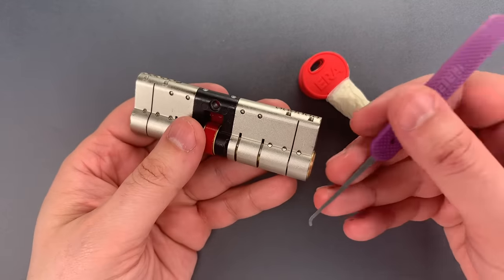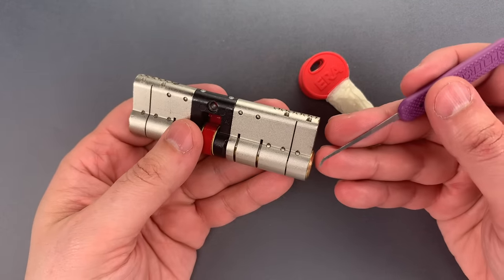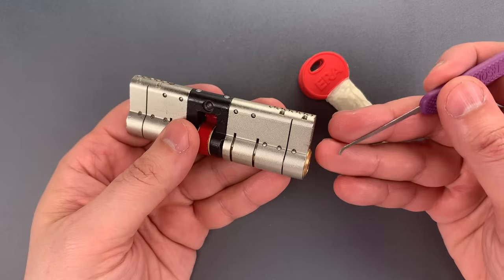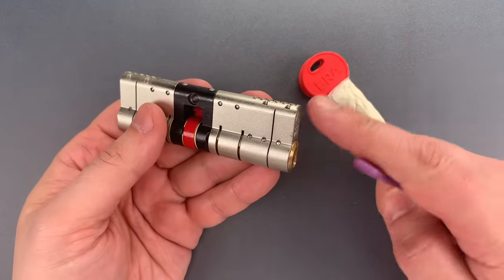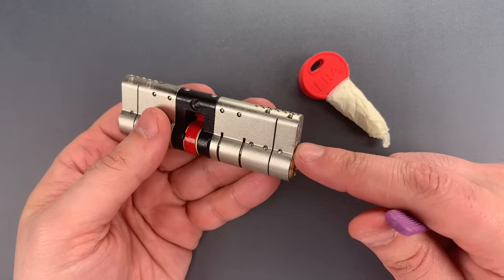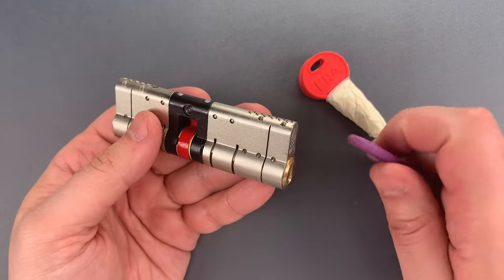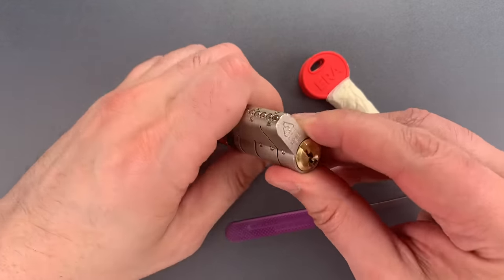If you don't know what a trap pin is, it's essentially a small rod that drops down and seizes the core if you attempt to turn it without the correct key inserted. If you don't know they're in there, picking past them can be very tricky. If you do know, however, there's a shortcut which I will show you in just a moment.